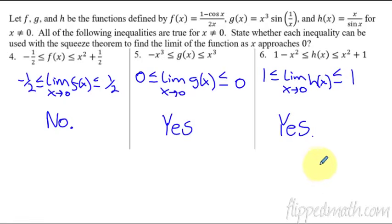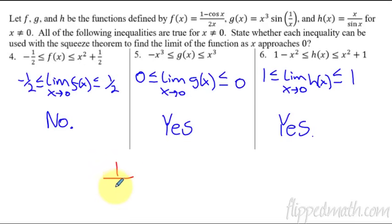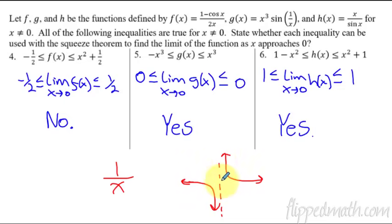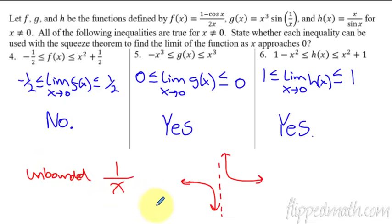Now, before I end this lesson, let me give you one more quick thing. If the boundary functions you're squeezing in between are unbounded — and what I mean by unbounded, an example would be 1 over x — because the graph of 1 over x as x approaches zero creates a vertical asymptote, and whether you approach from the left or the right, you have unbounded behavior going to negative infinity or infinity. So if one of these is unbounded, you cannot use the squeeze theorem. Unbounded behavior disqualifies the squeeze theorem from applying.